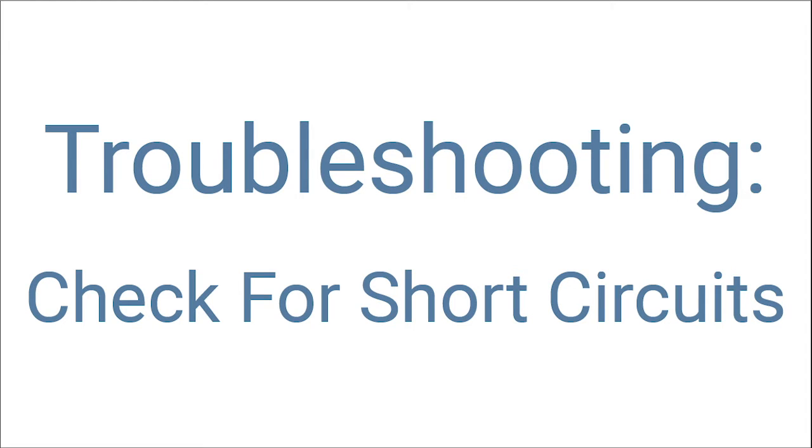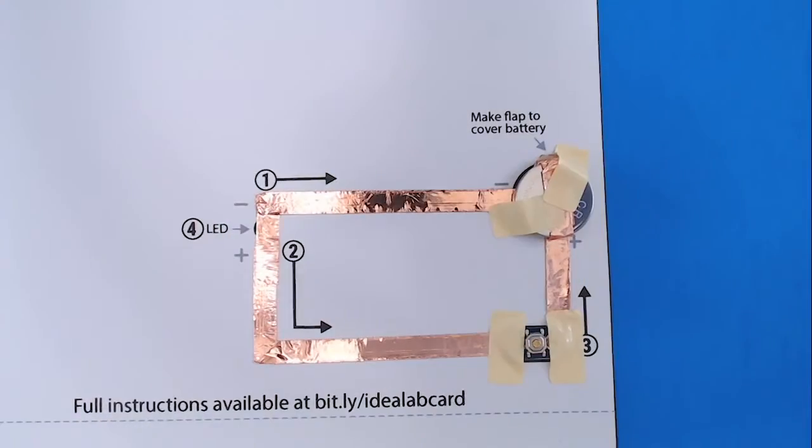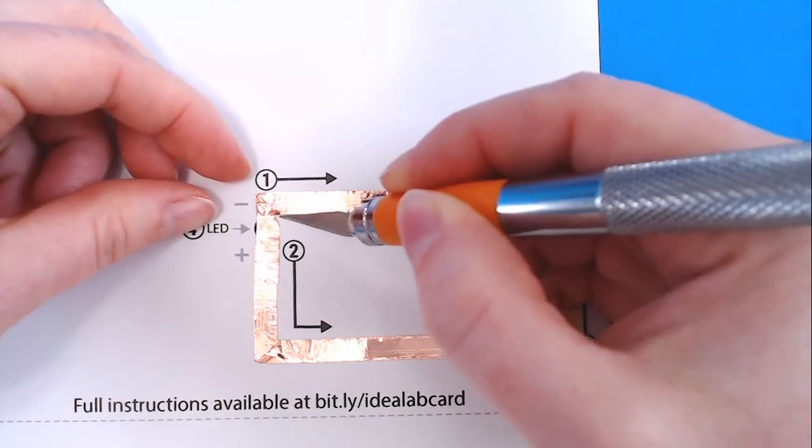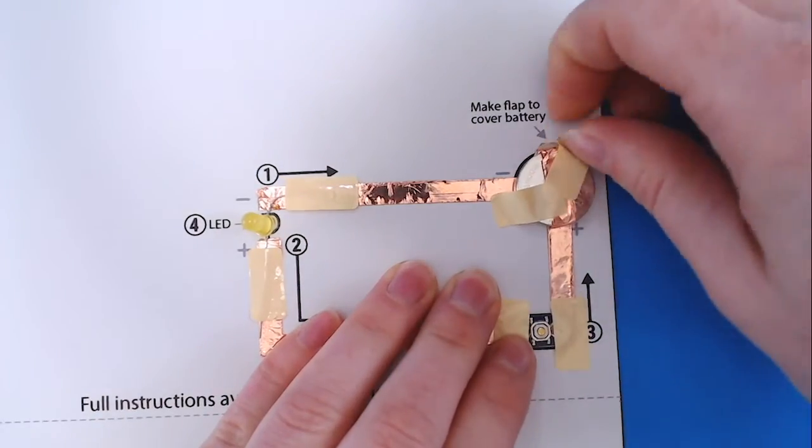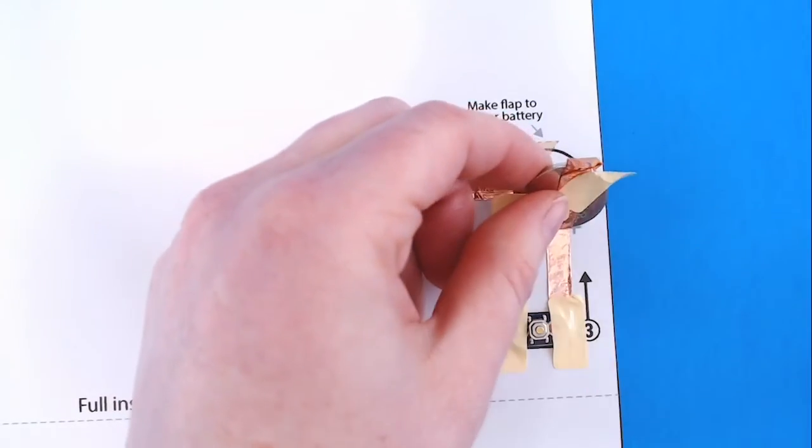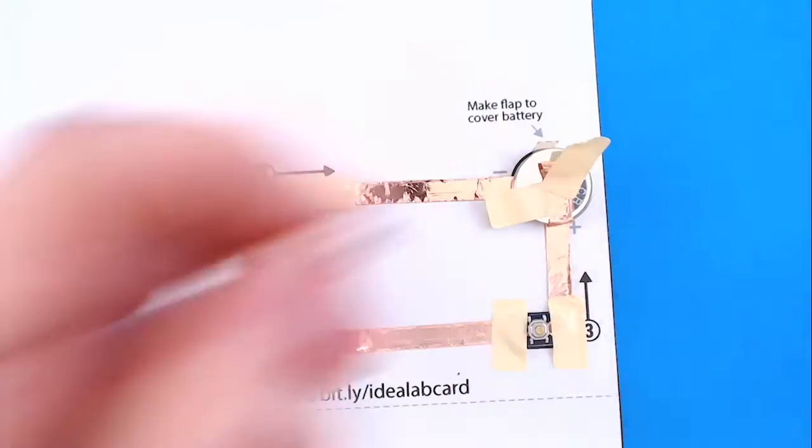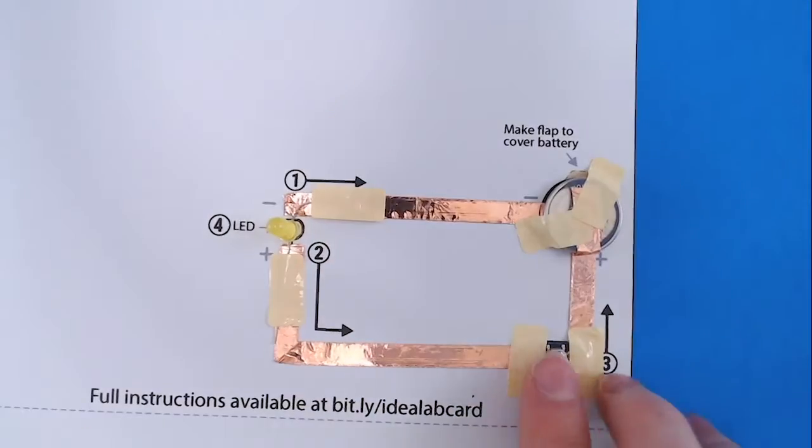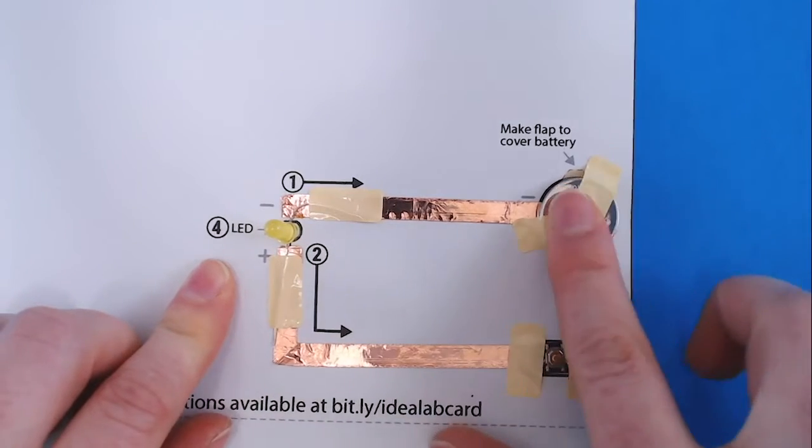The last troubleshooting technique we can try is to look for short circuits. On this project, I accidentally put some copper tape underneath the LED, so I'm going to pull that up and cut it so there's a gap that the LED covers. This project also has a flap that's going around the edge of the battery touching the bottom. I'm going to carefully lift that up too and trim it so it's only touching the top of the battery. If there's a short circuit near the battery, it may have used up all the battery power before you caught it, so you can test to see if it lights up and then get a fresh battery.